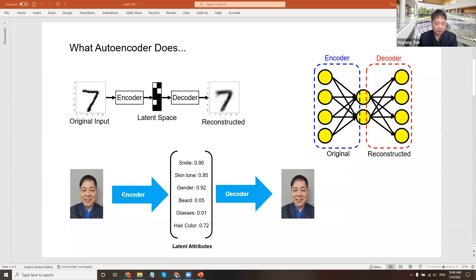Here's an original image. It goes to encoder. Rather than carrying all these 784 pixels, it will summarize it into a latent dimension which maybe, let's say, smile 90%, skin tone 85%, gender 92%, beard 5%, glasses 1%, hair color 72% - something like an abstraction of what this image is.